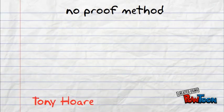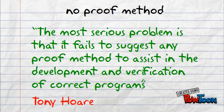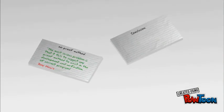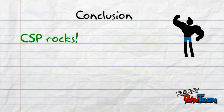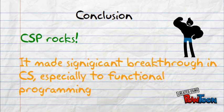The third is quoted by Tony Hoare: The most serious problem is that it fails to suggest any proof method to assist in the development and verification of correct programs. I'd like to add that CSP shifts the responsibility of correct termination of the program to programmer, as program termination cannot be proved. Nevertheless, CSP rocks and made significant breakthrough, especially in functional programming.